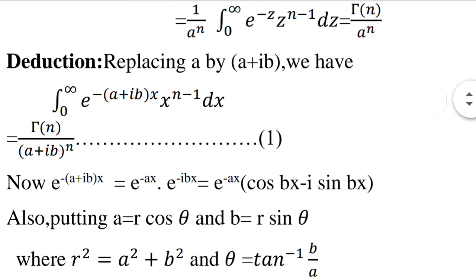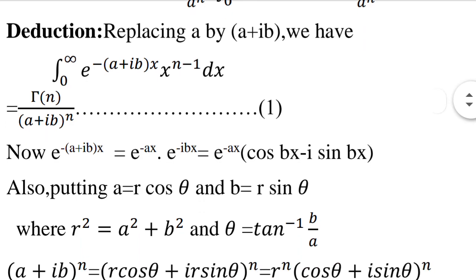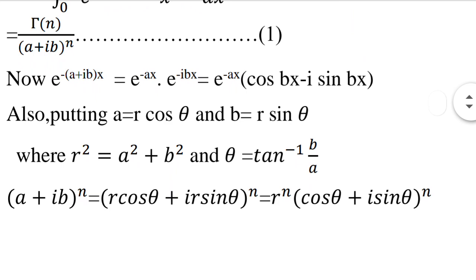For the right side, put a equal to r cos theta and b equal to r sin theta, where r squared equals a squared plus b squared and theta equals tan inverse b by a. Then a plus ib the whole raised to n equals r cos theta plus ir sin theta the whole raised to n, which equals r raised to n into cos theta plus i sin theta the whole raised to n.